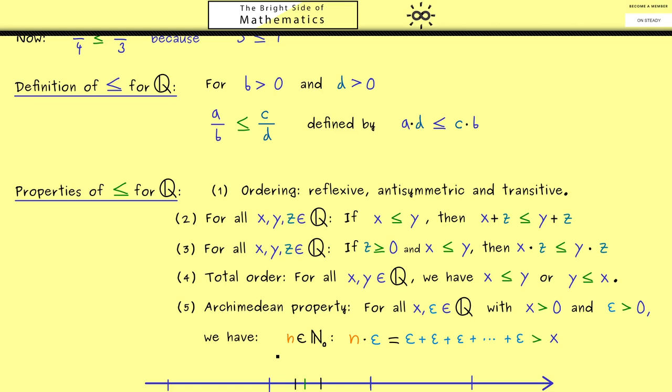OK, with this you now have all the important properties of the rational numbers. They form a so-called field, and they have ordering with these properties. And now to get to the real numbers, we just have to add one additional property. But of course, this is what we will do in the next videos. Therefore, I hope I see you there and have a nice day. Bye!